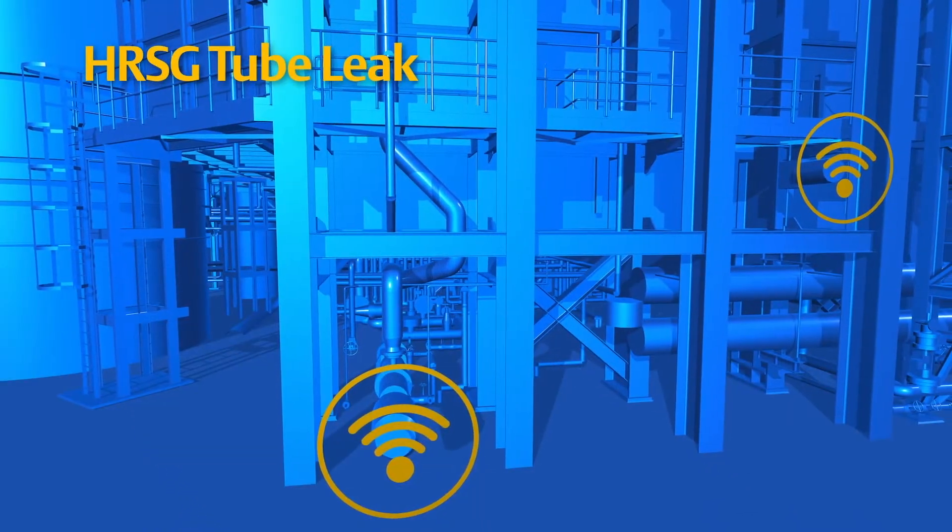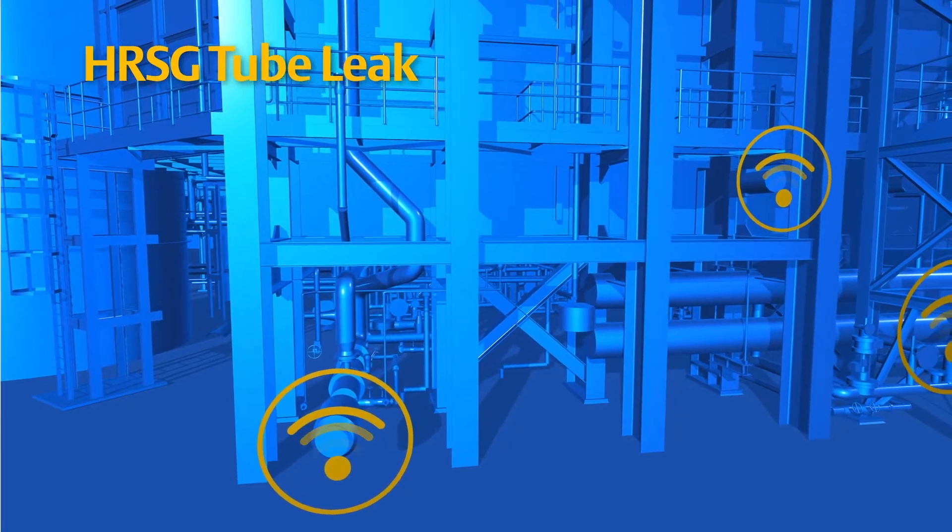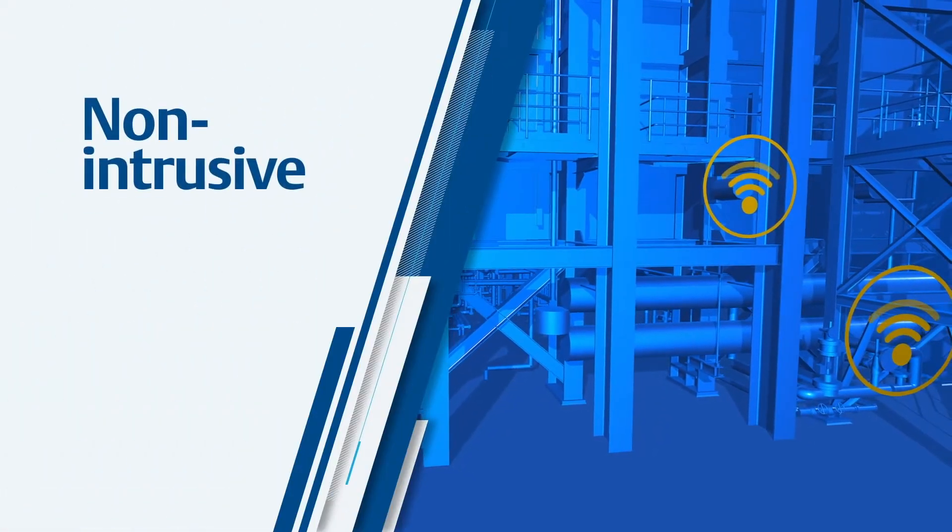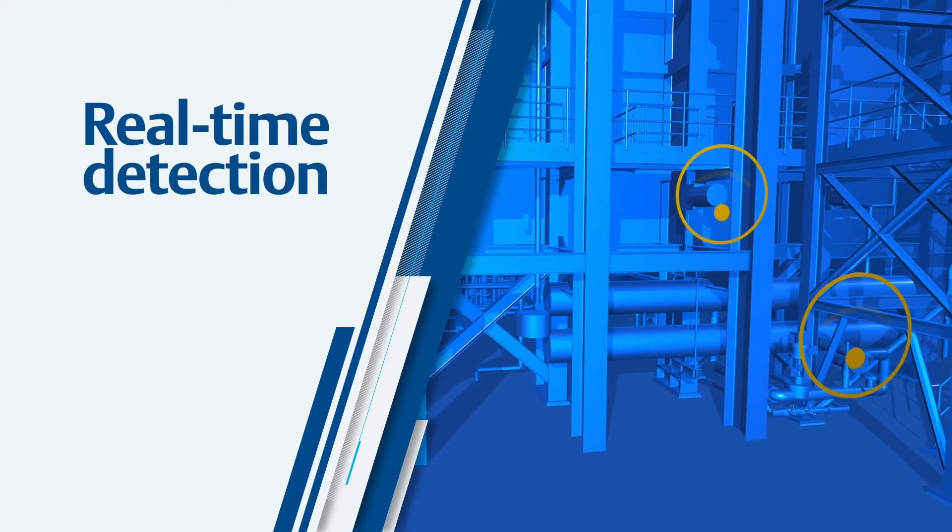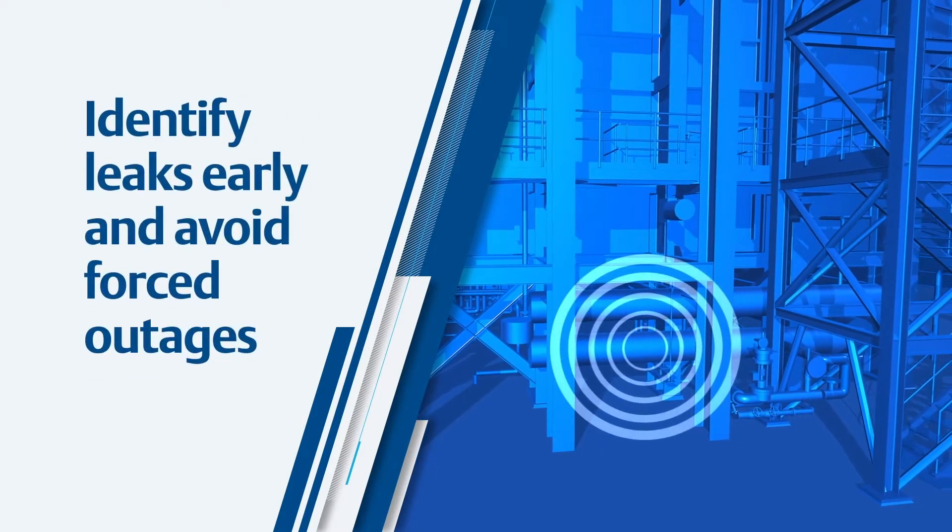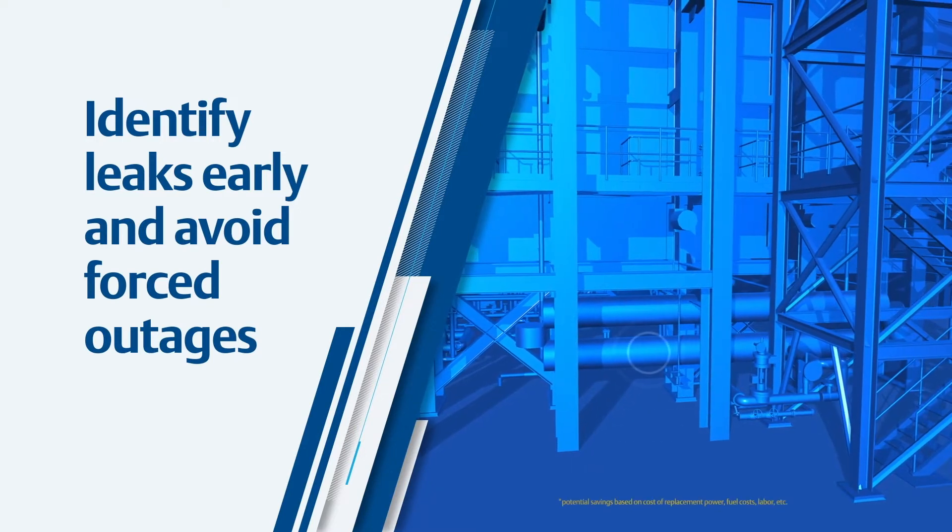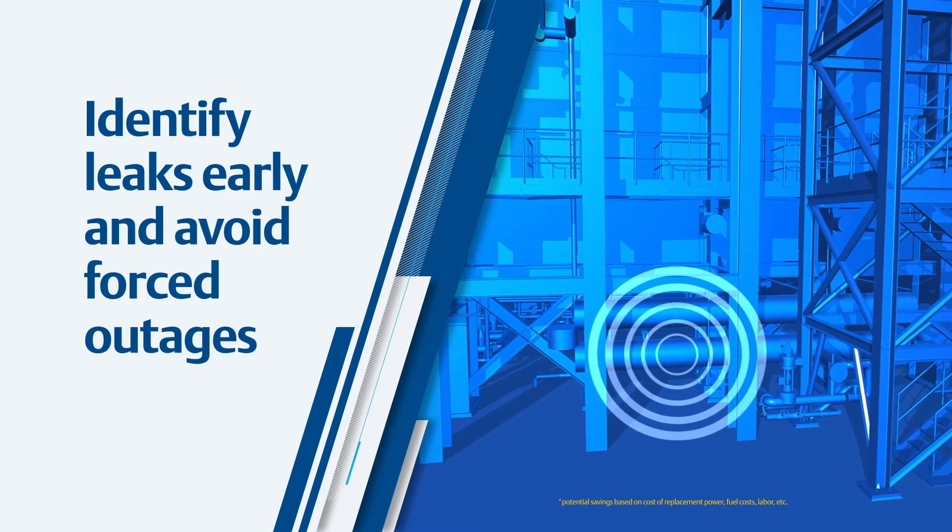For example, using wireless is a new innovative way to monitor tube leaks. Wireless acoustic monitors are non-intrusive devices that provide real-time HRSG tube leak detection so you can identify leaks early and avoid potential forced outages, with potential savings of up to $110,000 per HRSG.